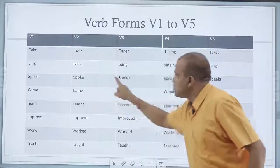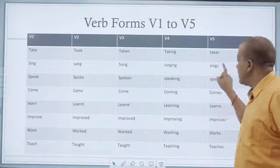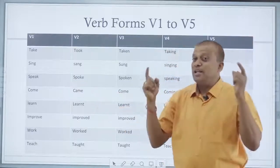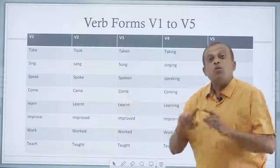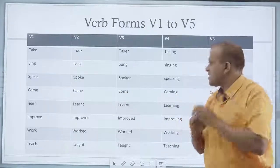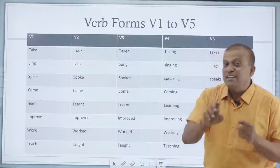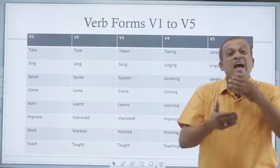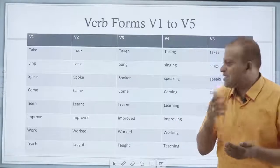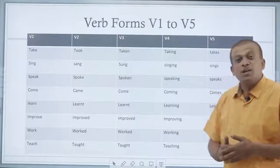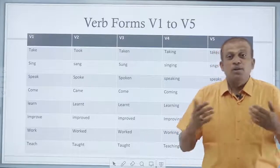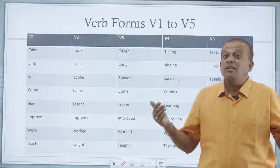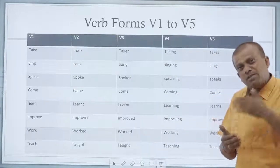Now: speak, spoke, spoken, speaking, speaks. I just give you an example. 'I speak' — what is the meaning of it, I will explain later. 'I spoke' — what does it indicate, we will discuss. Now 'spoken' — definitely there comes a helping verb: 'I have spoken' or 'he has spoken'. So when we have to use it, we will study it. Then 'speaking' — we cannot use the ing form without any helping verb. So: 'I am speaking', 'she is speaking', or 'they are speaking'. So what is the meaning of this, we will discuss.